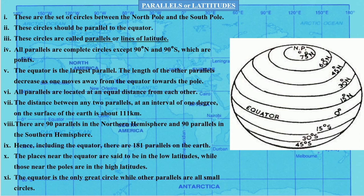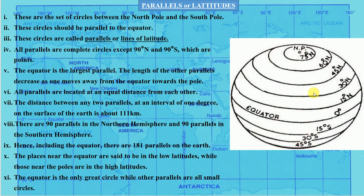As you can see here, all parallels are complete circles — except 90 degree North and 90 degree South, because these are just points. The equator is the largest parallel, and the length of other parallels decreases as one moves away from the equator, whether moving towards the North Pole or the South Pole. All parallels are located at an equal distance — they are equidistant from each other.